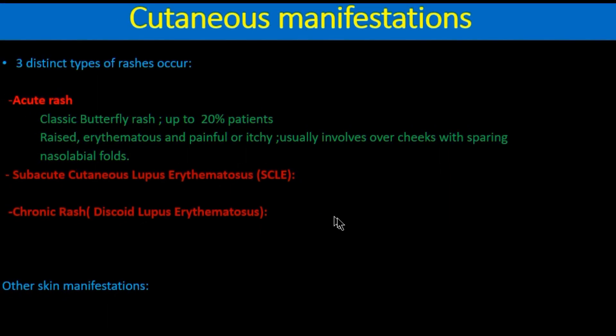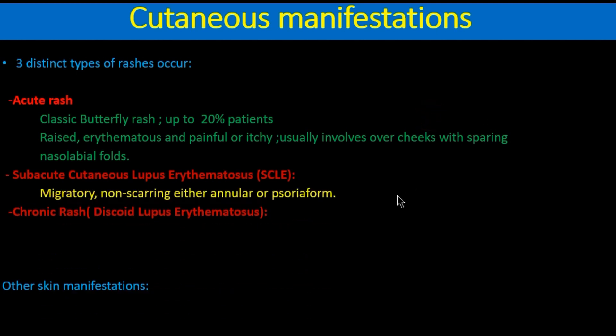Acute rash, which is also called butterfly rash, may occur in up to 20 percent of patients. It is raised, erythematous, and painful or itchy, and usually involves the cheeks, sparing the nasolabial folds.